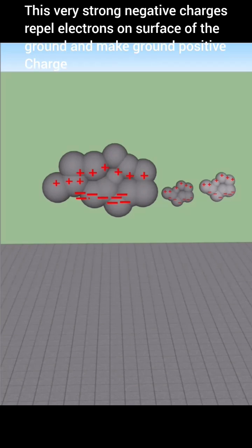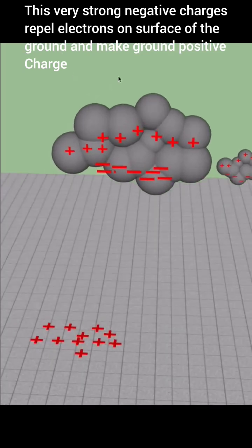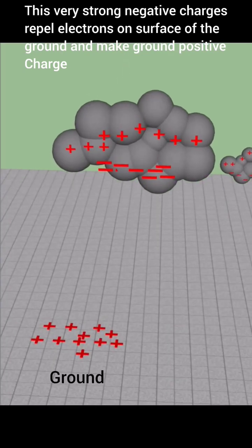This very strong negative charge repels electrons on the surface of the ground and makes the ground positively charged.